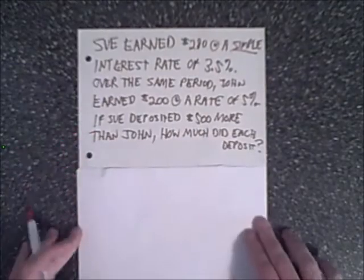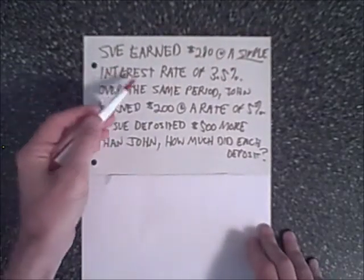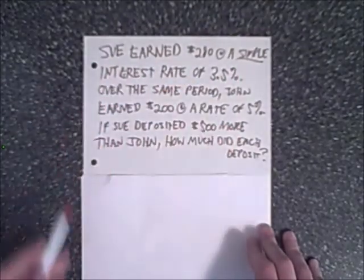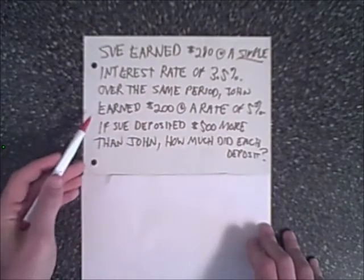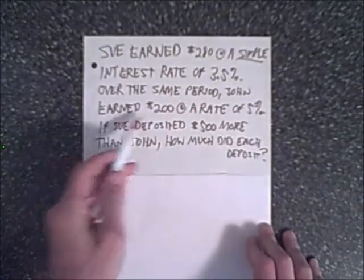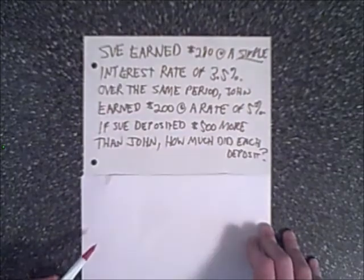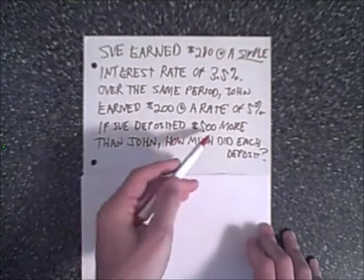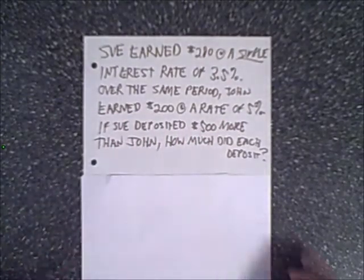We have a simple interest rate problem. Sue earned $280 at a simple interest rate of 3.5%. Over the same period, John earned $200 at a rate of 5%. If Sue deposited $500 more than John, how much did each deposit?